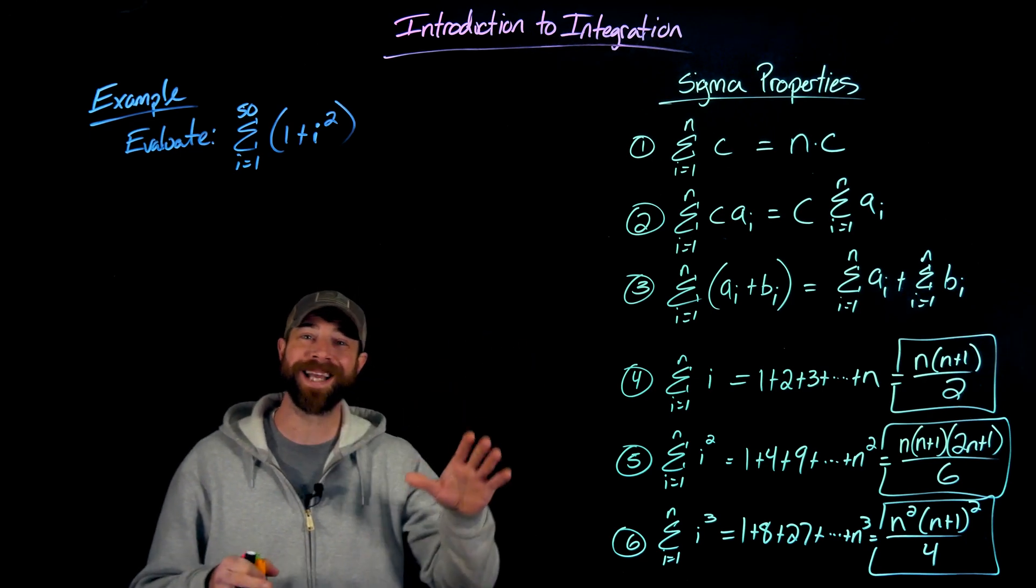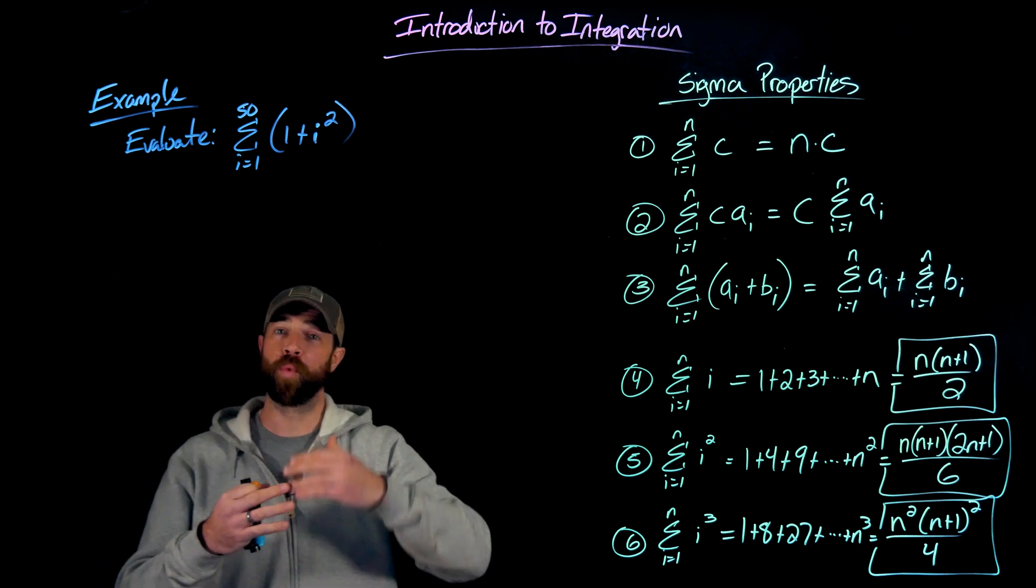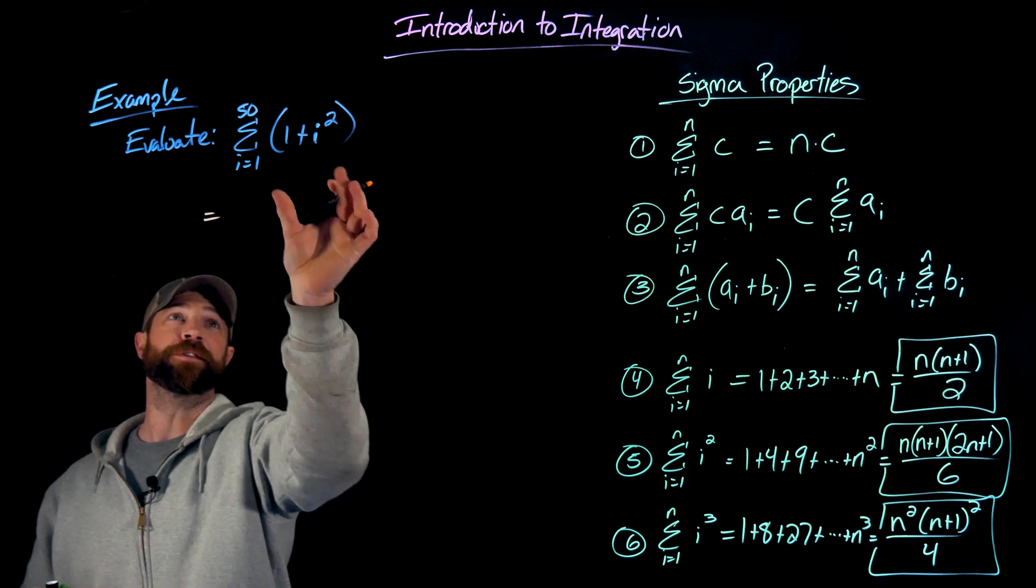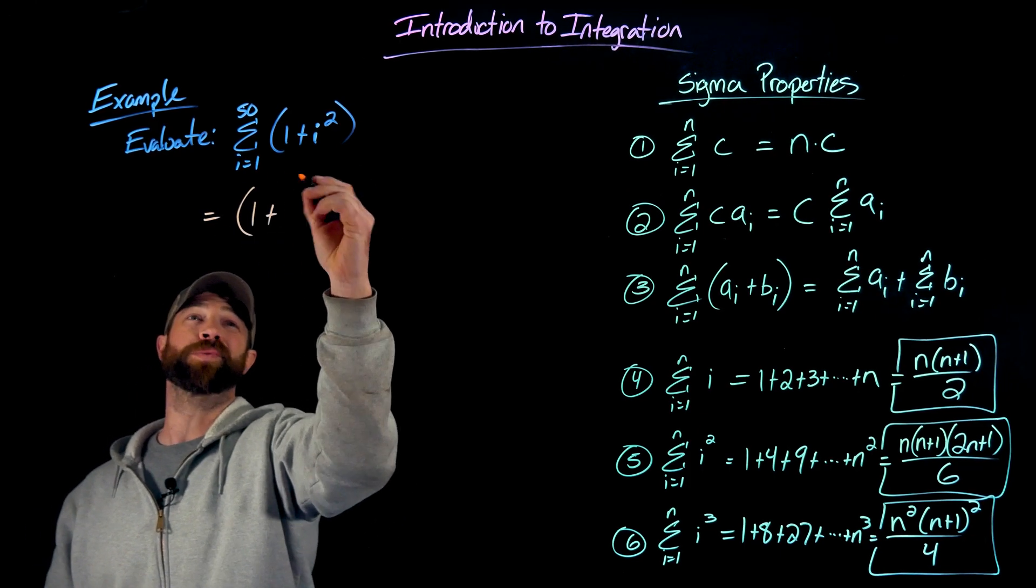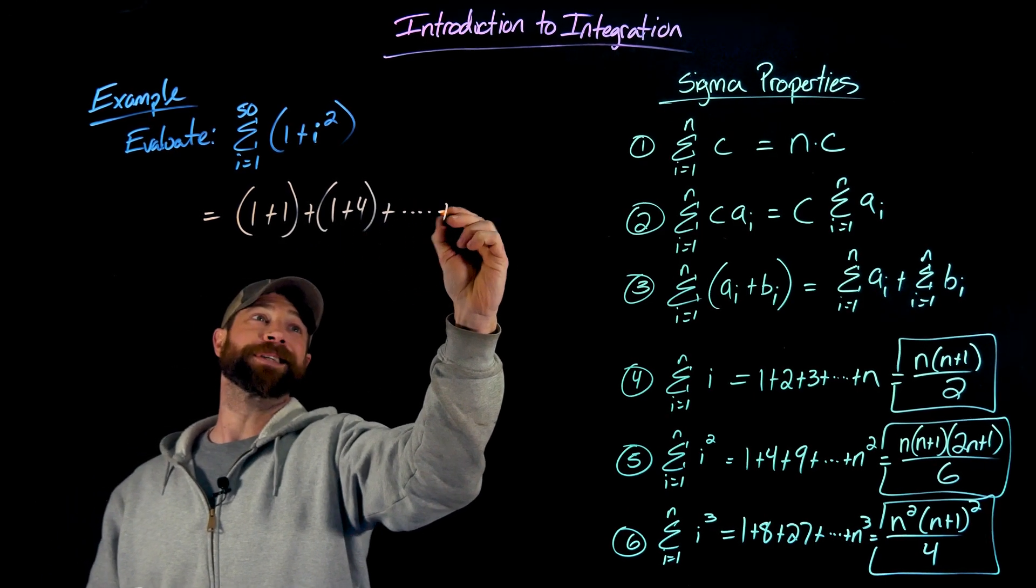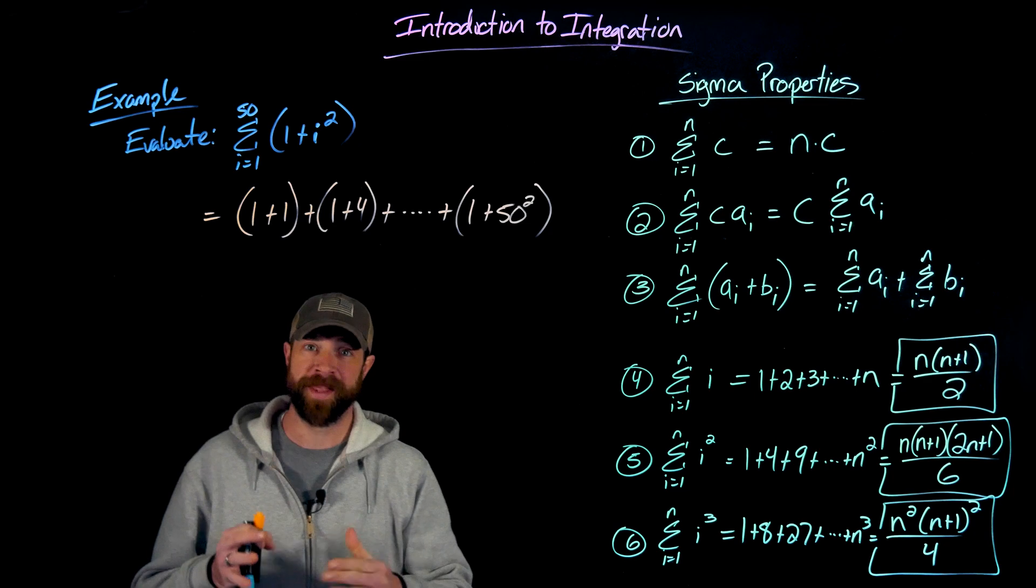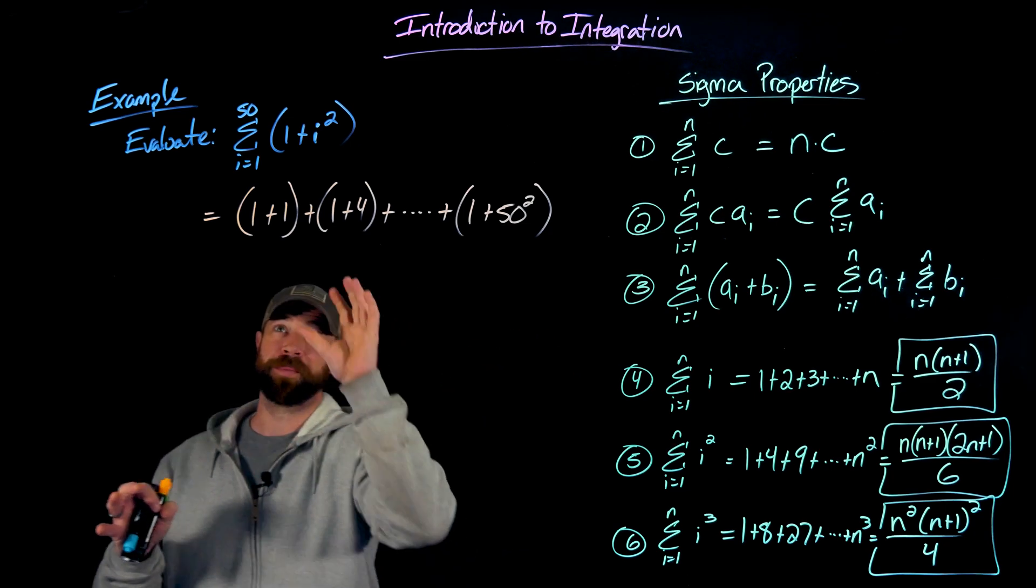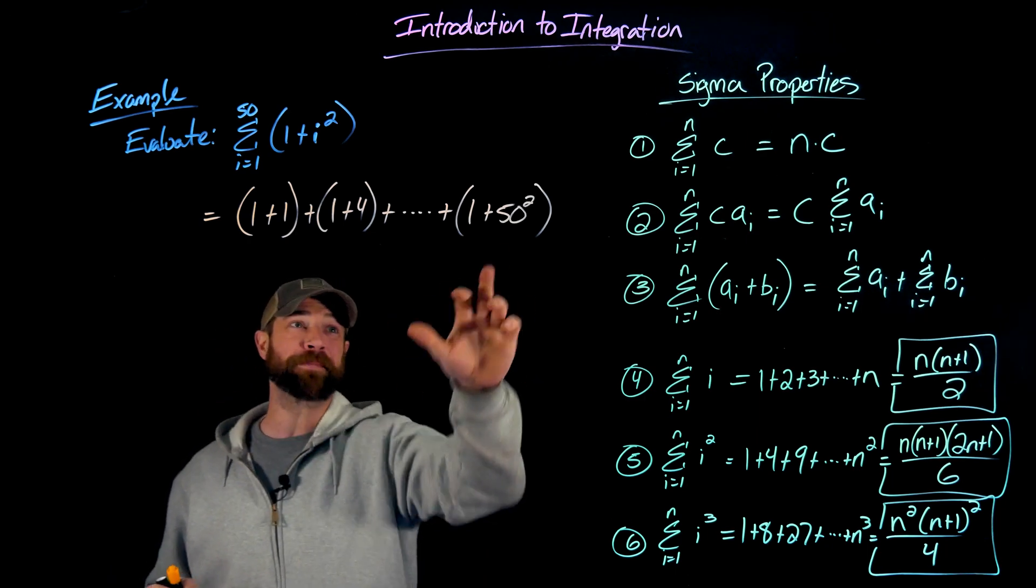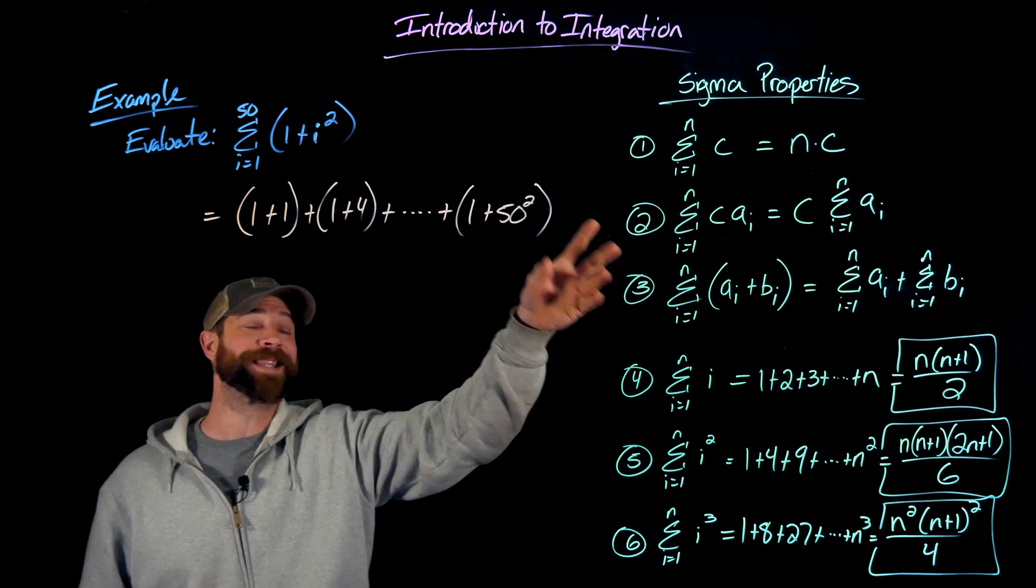Okay, then I want to give you an example showing why these are useful. So in this example right here, I'm being asked to evaluate this sum from one to 50 where each term is one plus i squared. So just to write out a few of these terms so we get a feel for what this is, the first term would be one plus one squared, the second term would be one plus two squared, all the way up to the last term which would be one plus 50 squared. And then I think you get maybe the idea of why we want these properties and we don't want to have to do all of this work of adding all of these terms together. This has 50 terms and they get pretty large especially towards the end. So what we're going to do is evaluate these with these properties.